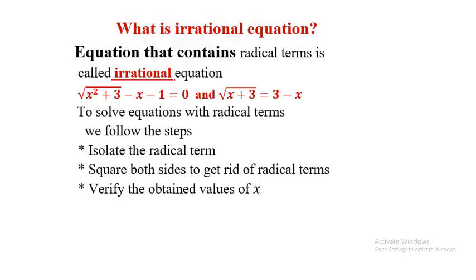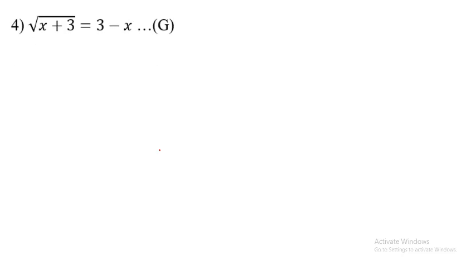Now for irrational equations, which contain radical terms. To solve equations with radical terms, we follow these steps: isolate the radical term, square both sides to get rid of radical terms, and verify the obtained values of x.